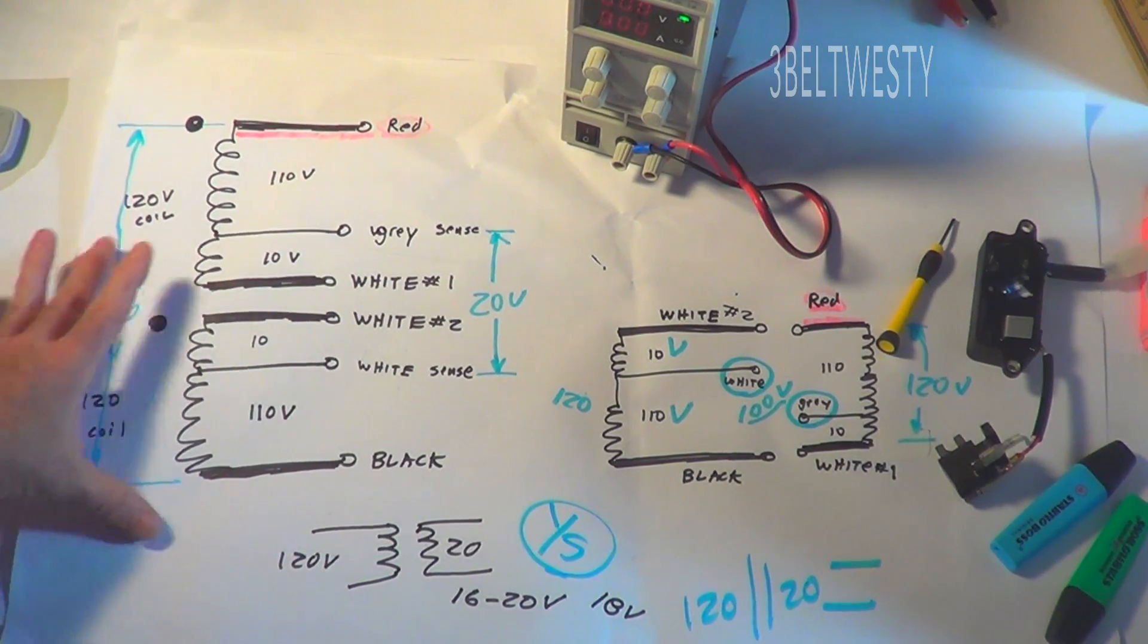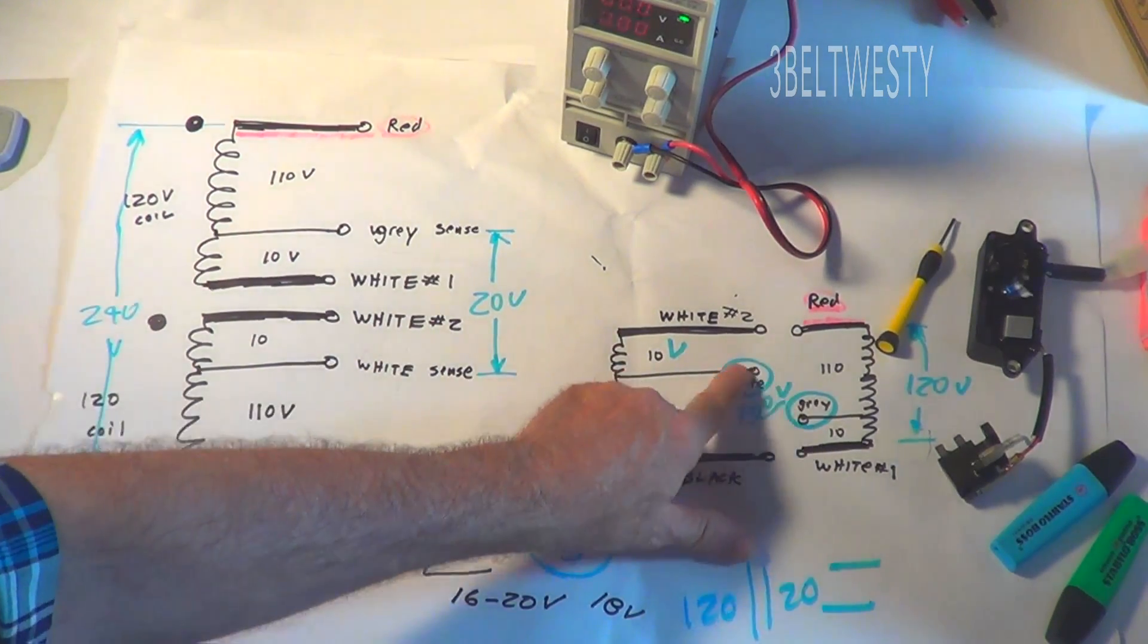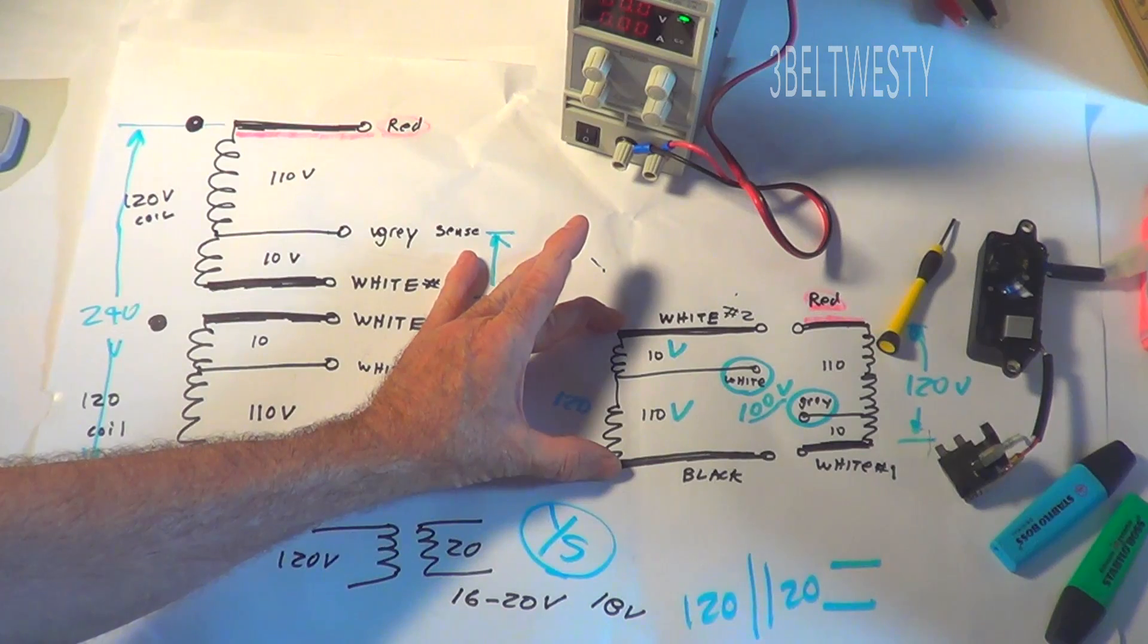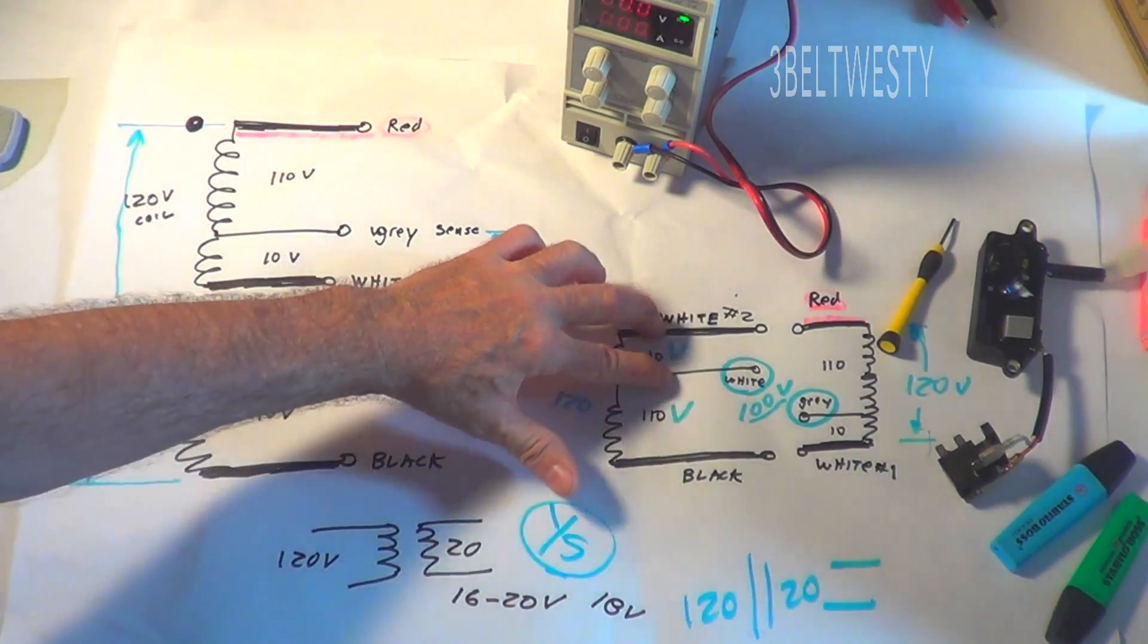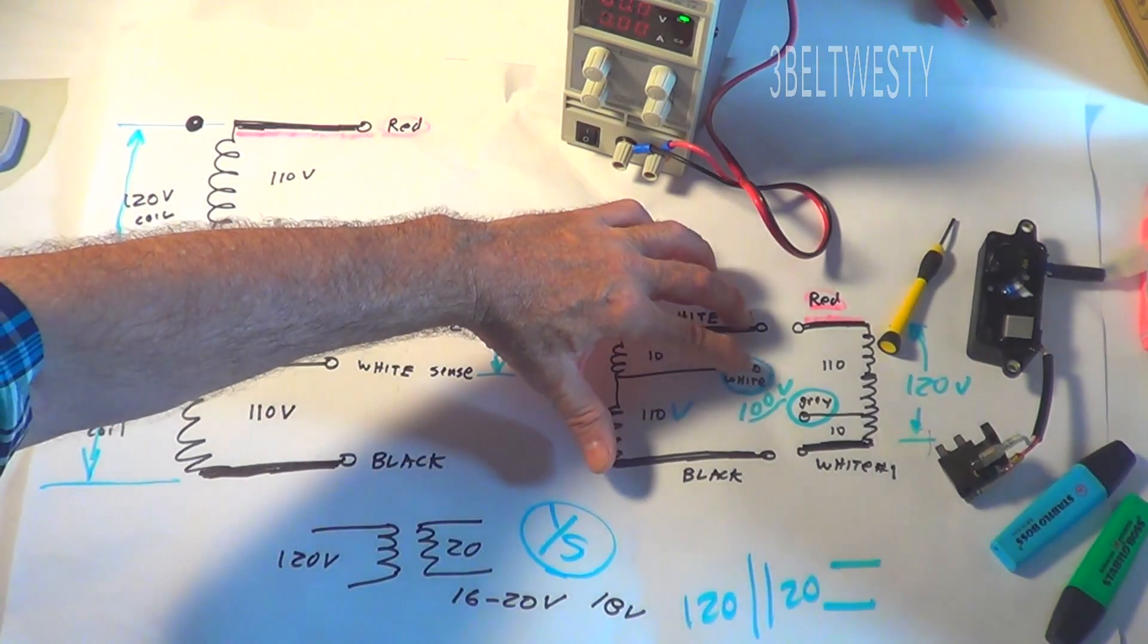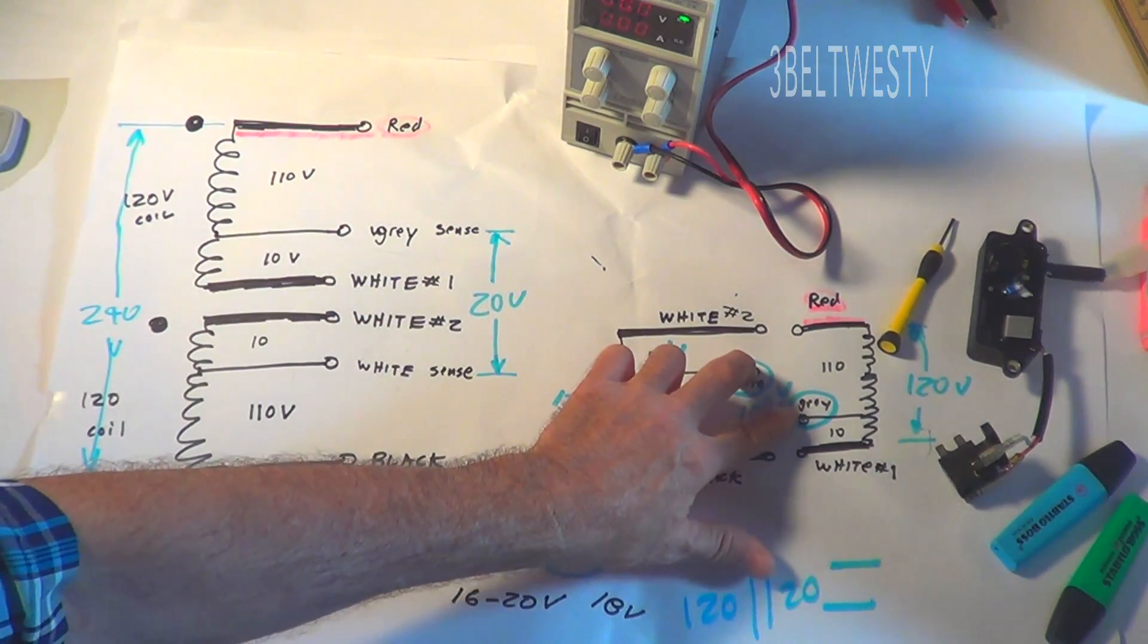I hope that answers the question why you've been only getting 20 volts across this. The output on this, 20 to 24, is because the way the sense coils are on both sides here when it's put in parallel. Unfortunately these two add up to 100 volts.